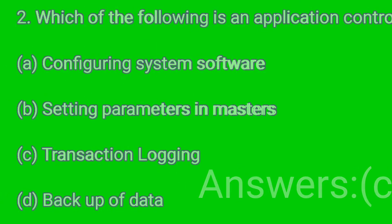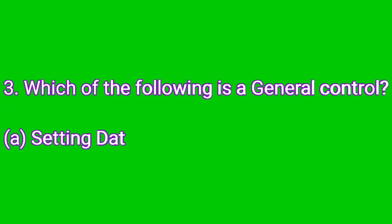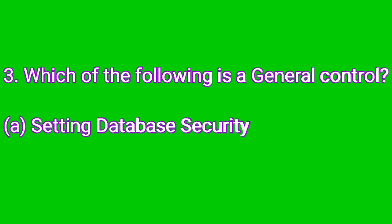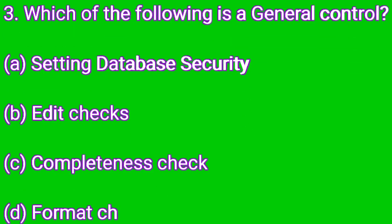Question number three: which of the following is a general control? Option A: Setting database security. Option B: Edit check. Option C: Completeness check. Option D: Format check. The answer is A — Setting database security is a general control, so the right answer is A: Setting database security.